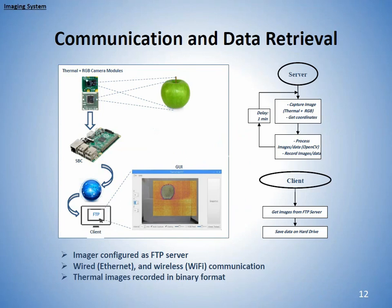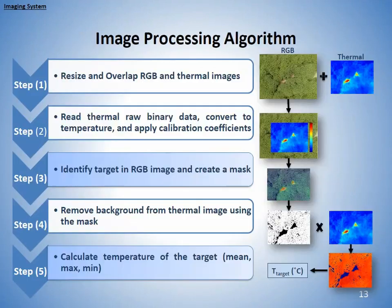What the imager does is take thermal and RGB images of the same target and process them. To retrieve data from the imager, there are different ways — we can retrieve data wirelessly or connect directly to the imager. The thermal images are recorded in binary format, which is a standard format that can be analyzed in MATLAB or any software that can open binary files.